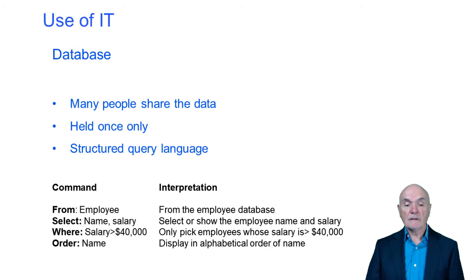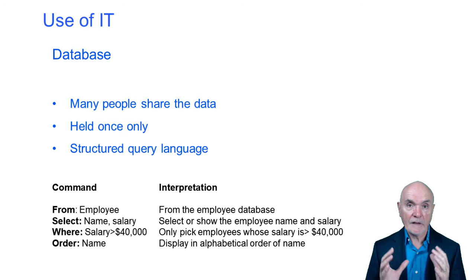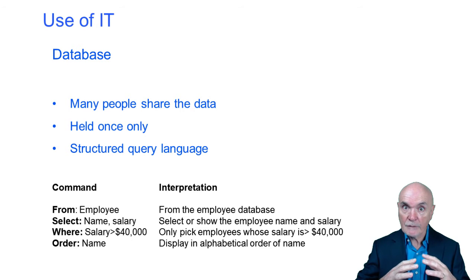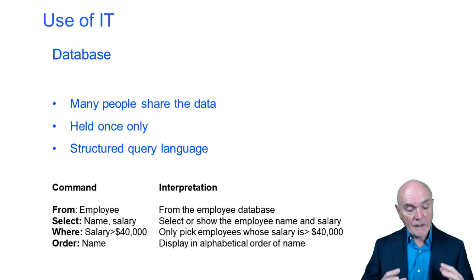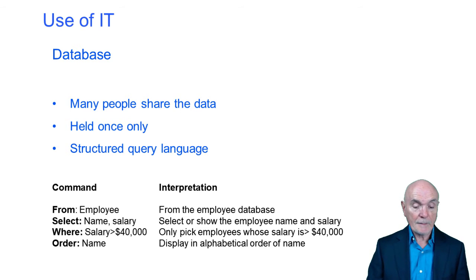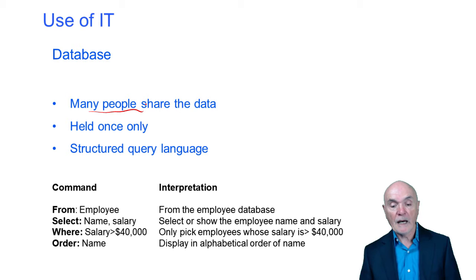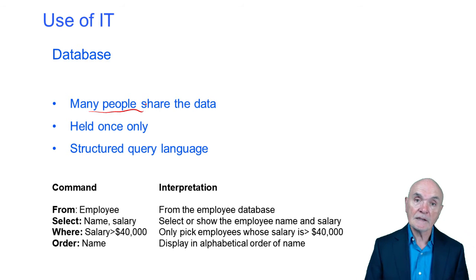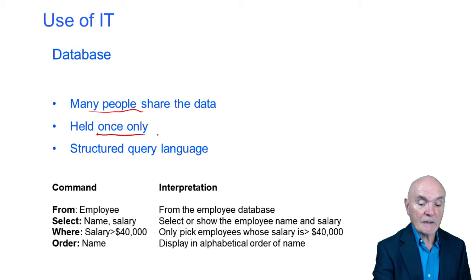Whereas you've probably used a spreadsheet, you may not have used databases. We all have the feeling that a database is a vast amount of accumulated data — and of course it is. But if you have a vast amount of data, it's liable to be fairly diverse. Perhaps the key characteristic of a database is that out of this vast array of data, many people and many departments can use that data, update it and share it. The great thing is that the data only needs to be held once.